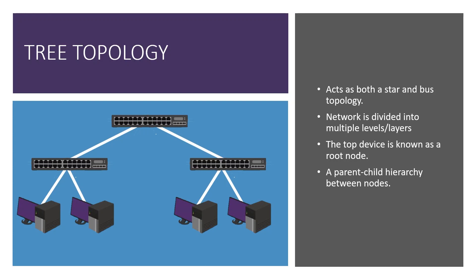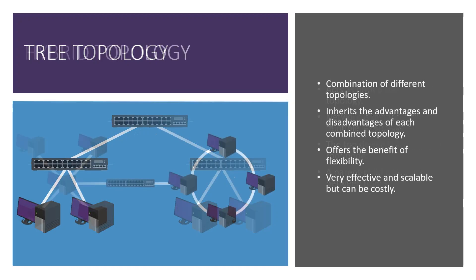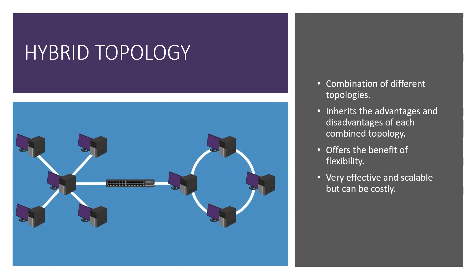The tree topology has a parent-child hierarchy between the nodes. Our last one is the hybrid topology, which is a combination of different topologies. In the depiction shown here, we have a ring connecting to a star topology — it's a combination of both connecting together.